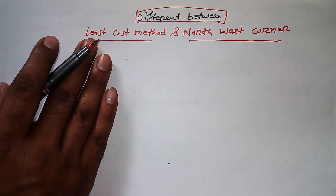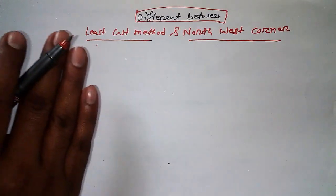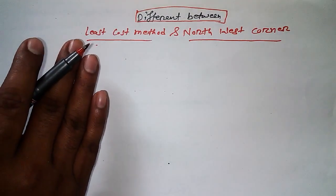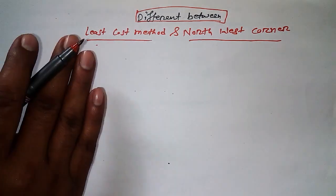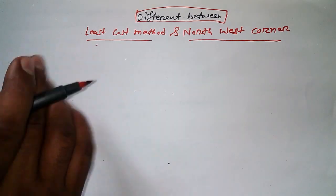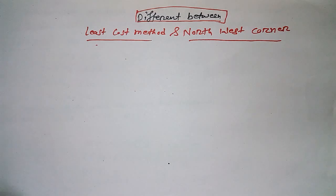So what is the meaning of this? This method should be used if we want to decrease the transportation cost. And who doesn't want to decrease the transportation cost? Everybody wants to get more profit. So if we have two options to find out transportation cost, then I must go for Least Cost Method.